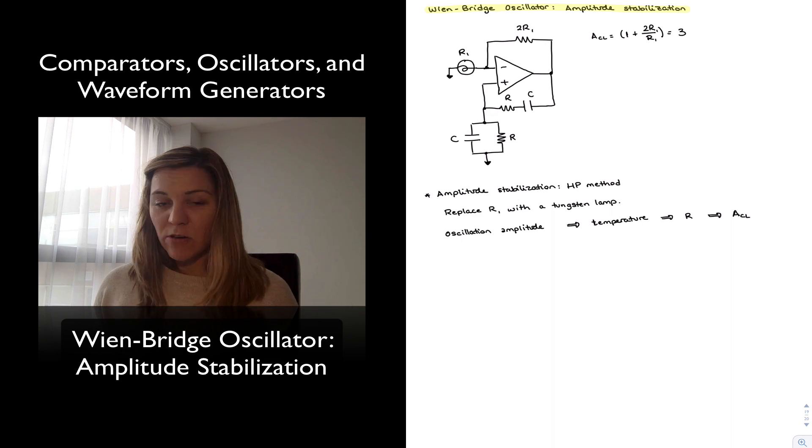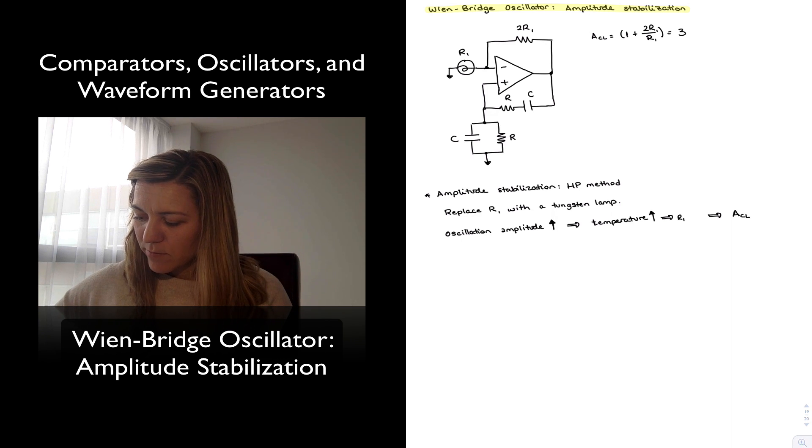So let's imagine that our oscillation, since we have a gain initially greater than 3, the amplitude is going to start increasing, so as the oscillation amplitude increases, the amount of power dissipation also increases, which causes the temperature in the lamp to increase. As the temperature in the lamp increases,